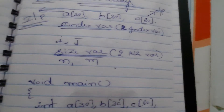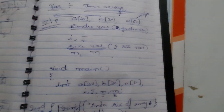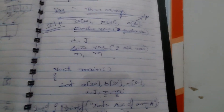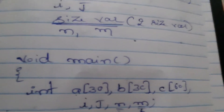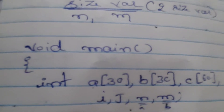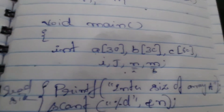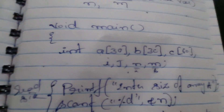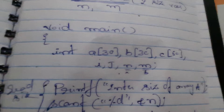Now let's start the program. How to declare arrays? Int A of 30, B of 30, and C of 60. And two index variables I and J, and two size variables N and M — all of integer data type. You can declare them in one line. Next, we will read the size of array A using printf and scanf.